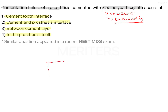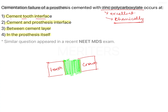Suppose this is your tooth and this is your crown and there is cement in between them. The question is: if there is any failure of cementation, where does it occur? The cement-tooth interface — this blue area — is interface A. The cement and prosthesis interface is B. Between the cement layer is C, and interface D is within the crown itself from the internal surface.